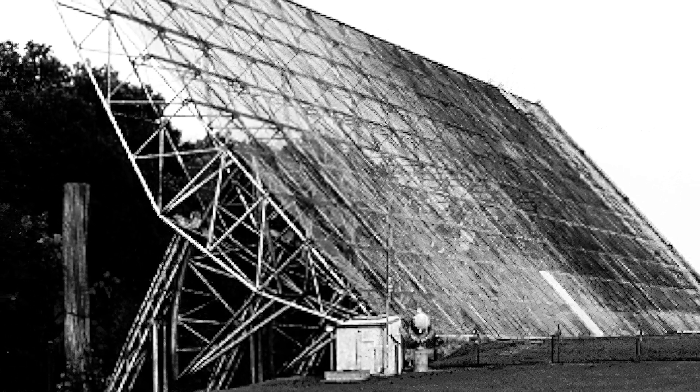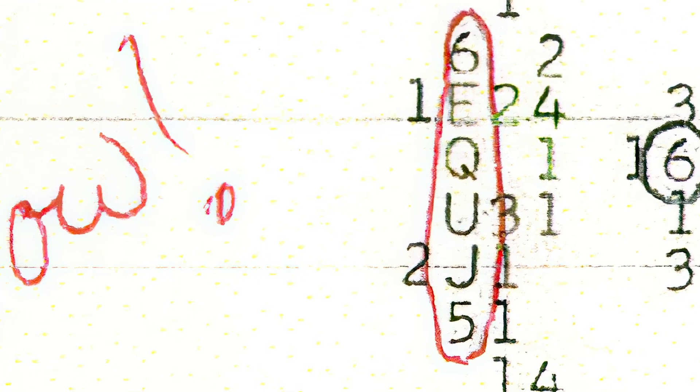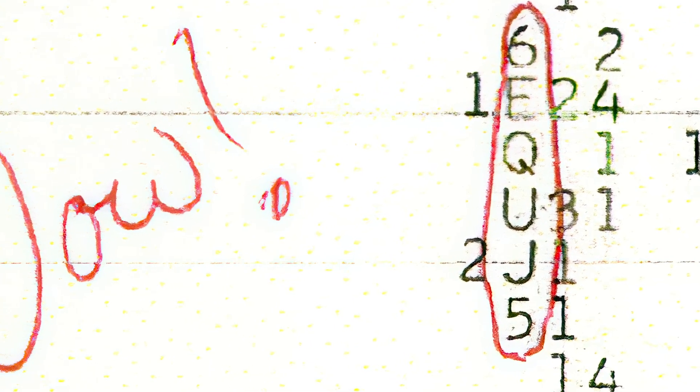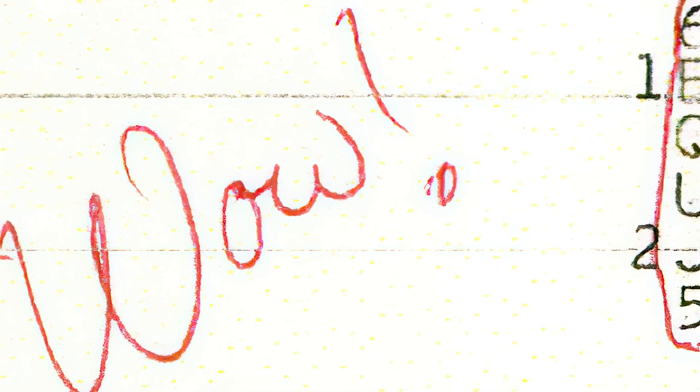It seemed to be coming from Sagittarius, but didn't match with any celestial object. The signal was so strange and powerful that they even circled it on a readout and scribbled WOW next to it. For years, people pointed to the signal as evidence of aliens.